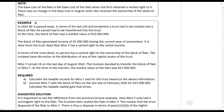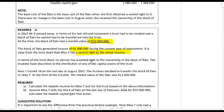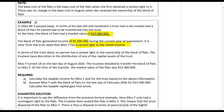Now compare that to the next example. In 20X2, Mr. X passed away. In terms of his last will and testament, a trust had to be created and a block of flats he owned had to be transferred into the trust. The block of flats had a market value of 10 million rands and generated income of a million rands during the year. Ms. Y has a vested right to the rental income. However, very importantly, no person has a vested right to the ownership of the block of flats — the trustees have discretion in the distribution of any capital assets.